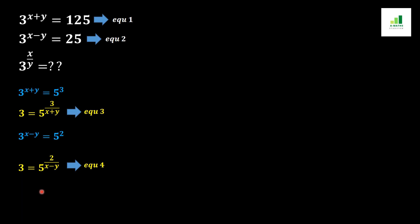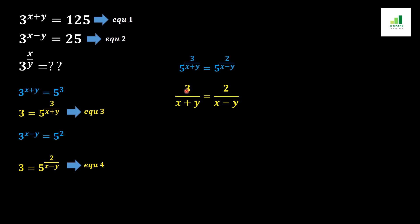From the basic rule of algebra, if one side of two equations are equal, the other sides are also equal. Comparing equation three and equation four, we get 5 to the power 3 over x plus y equals 5 to the power 2 over x minus y. Since the bases are equal, their powers must also be equal, giving us 3 over x plus y equals 2 over x minus y.